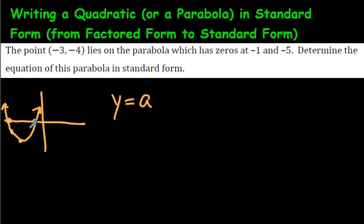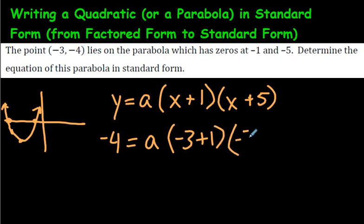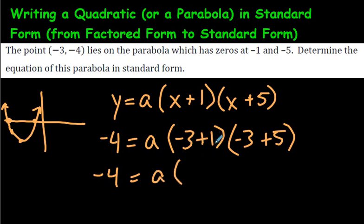Let's start by writing this in factored form. We don't know the a value yet, so we write a. The zeros are at negative 1 and negative 5, so we write (x + 1)(x + 5) — be careful, don't put negative 1 or negative 5 directly; put the opposites. To find a, we substitute x = negative 3 and y = negative 4. So: negative 4 = a(negative 3 + 1)(negative 3 + 5).